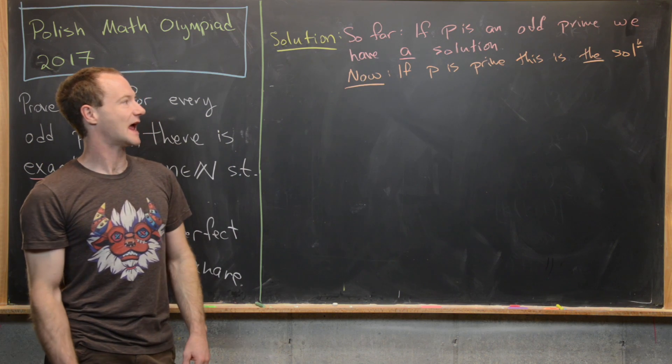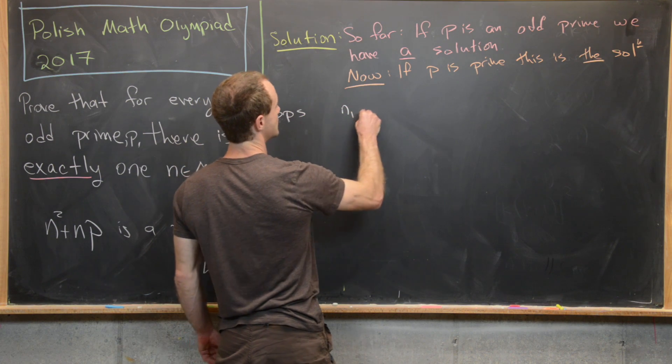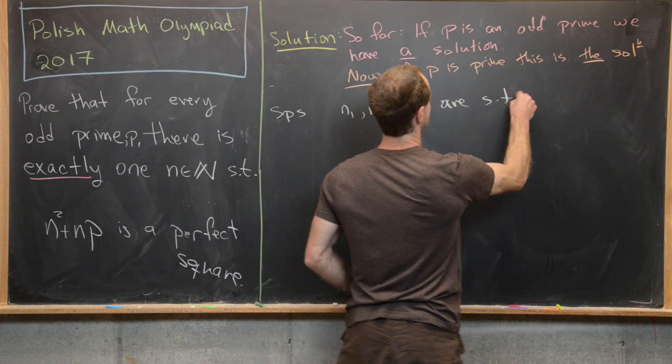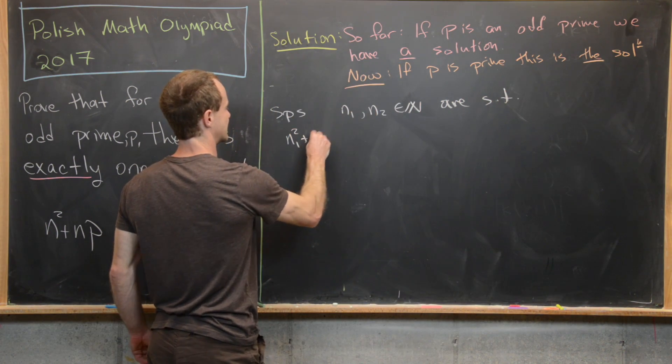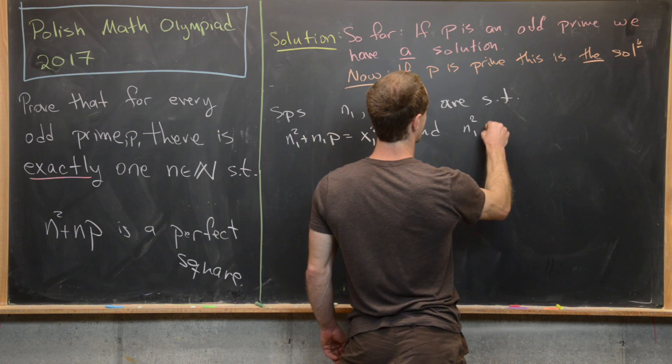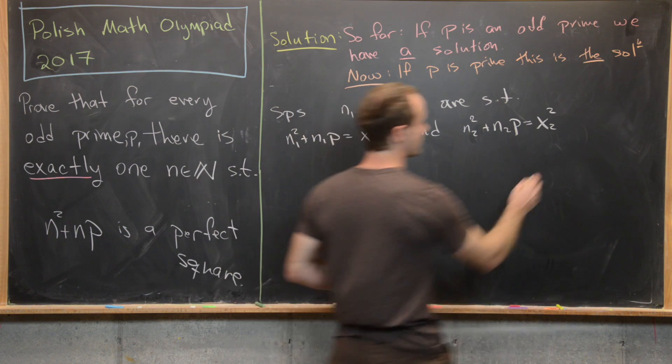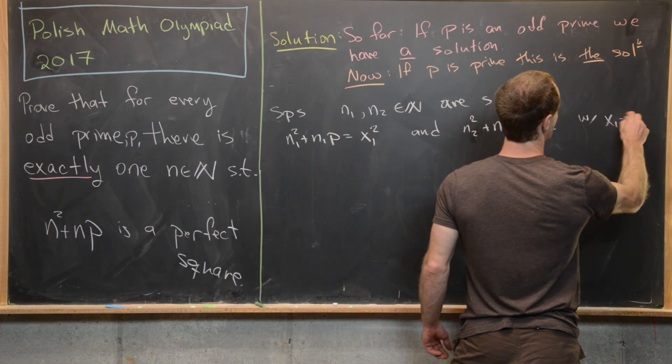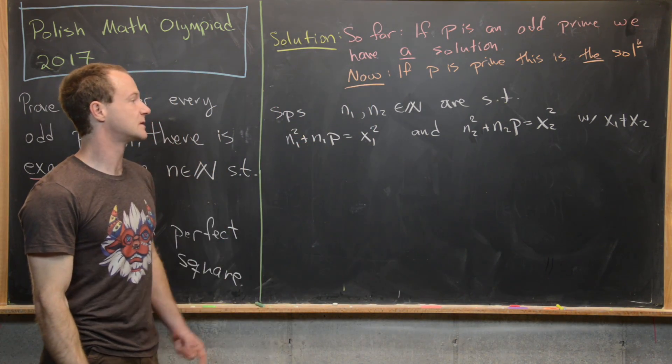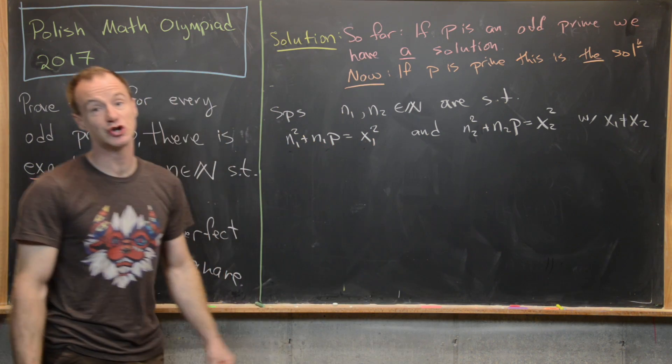So let's maybe go ahead and suppose that we have more than one solution. So suppose that n one and n two in the natural numbers are such that we have n one squared plus n one p equals x one squared and n two squared plus n two p equals x two squared with x one not equal to x two, and thus n one also not equal to n two. So in other words, we've got a way of combining p in this fashion to get a perfect square two different ways.